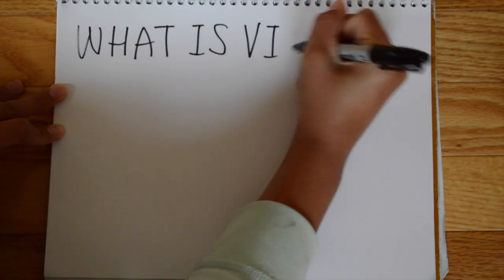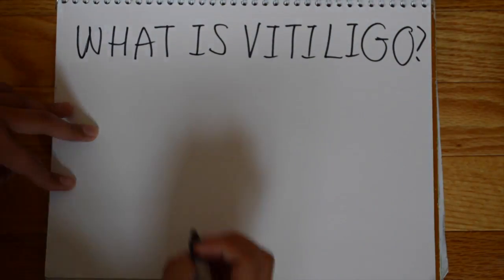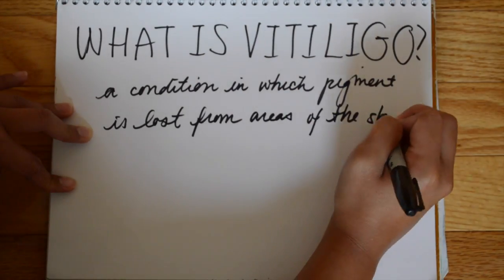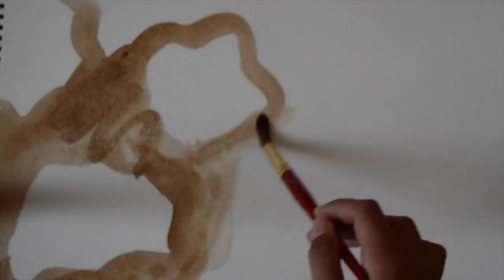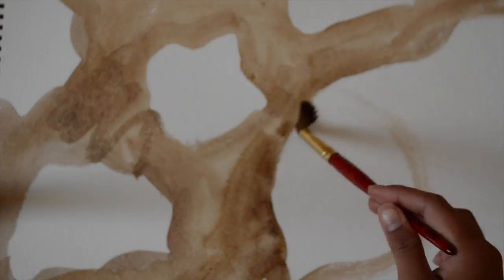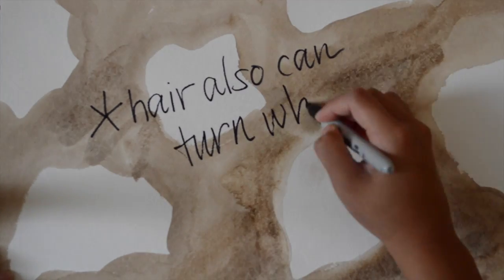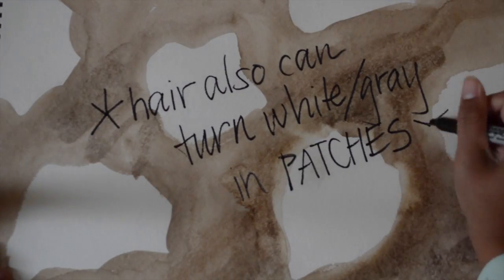So what is vitiligo? Vitiligo is a disease that causes the loss of skin color in blotches. The extent and rate of color loss in vitiligo is unpredictable. But generally, the discoloration first occurs on some exposed areas of the skin, such as the hand. Vitiligo also affects accessory structures of the skin, such as hair or nail.